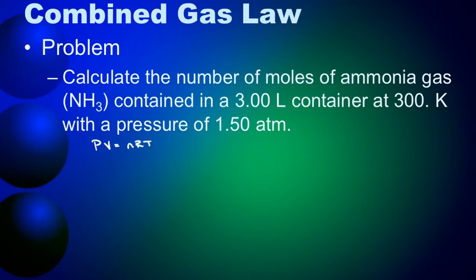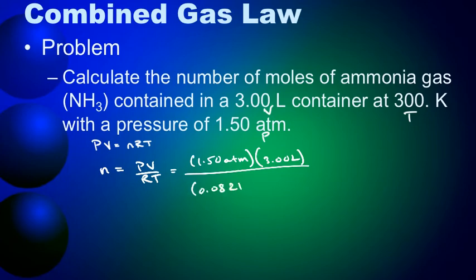So we'll try a sample problem here. Calculate the number of moles of ammonia gas, which is NH3, contained in a 3-liter container at 300 Kelvin with a pressure of 1.50 atmospheres. So the one variable we don't know is N. I've got volume here, I've got a temperature, and I've got a pressure. So we're going to rearrange this equation for N. We'll bring RT to the other side, so we get PV over RT is equal to N. The pressure here was 1.50 atmospheres. It's in the correct unit, so that's good. The volume is 3.00 liters, also in the correct unit. R is 0.0821 liters times atmospheres over moles times Kelvin. And T is 300 Kelvin with three significant figures. Let's plug this in. So we get 1.5 times 3 divided by 0.0821 divided by 300.